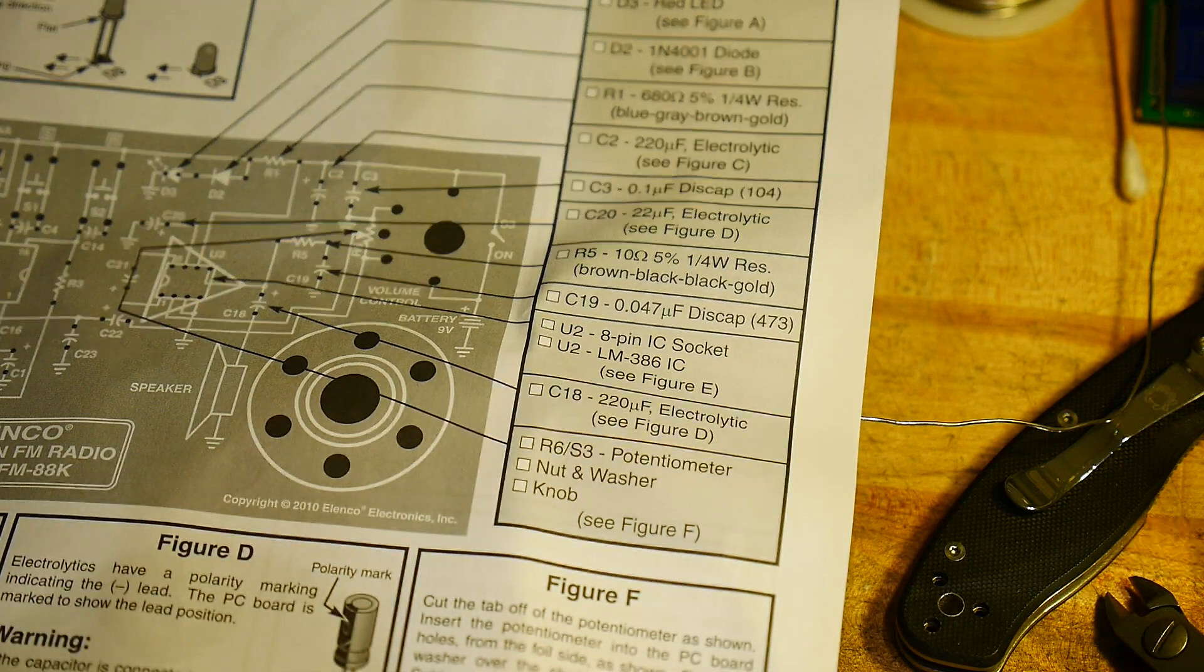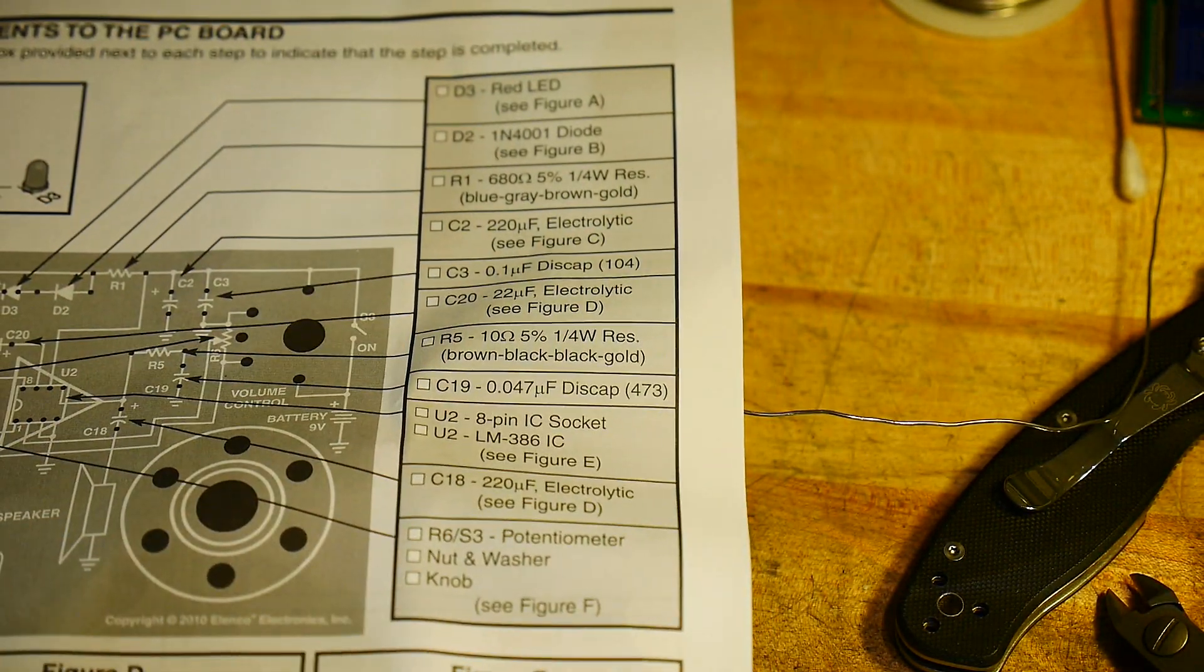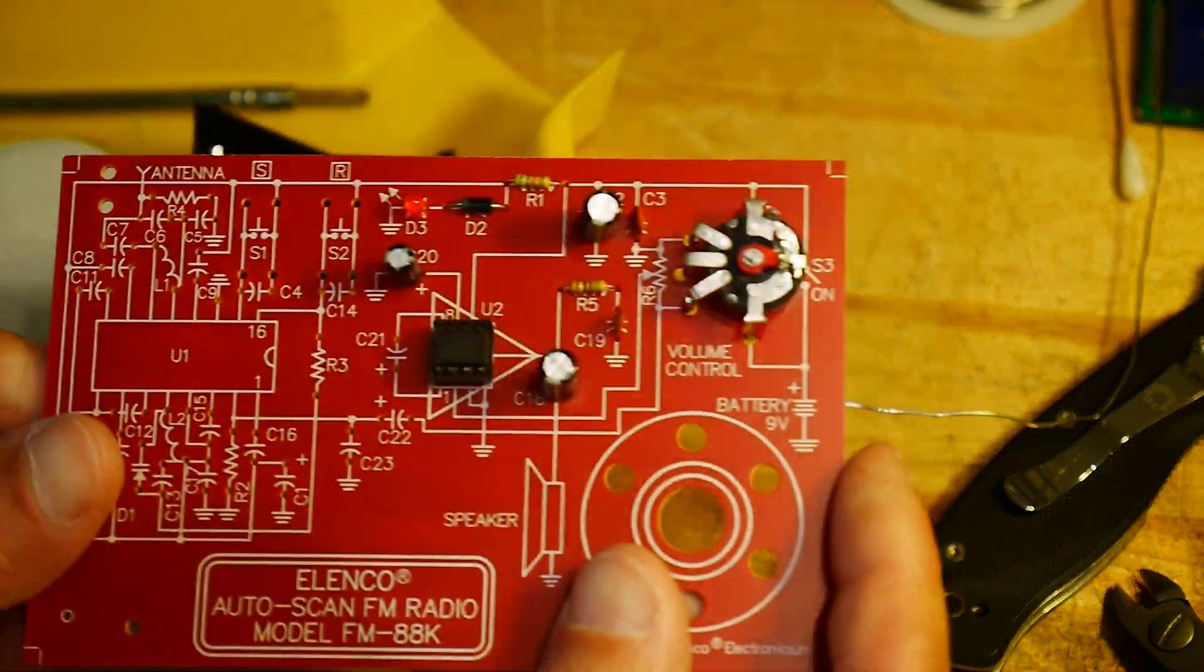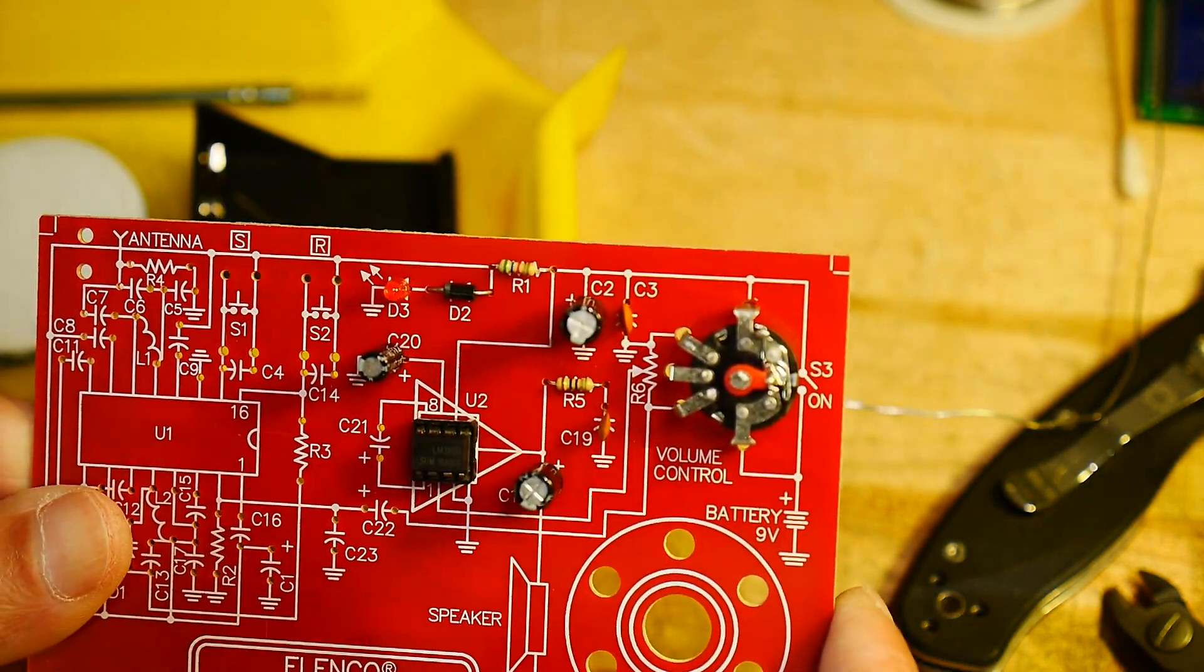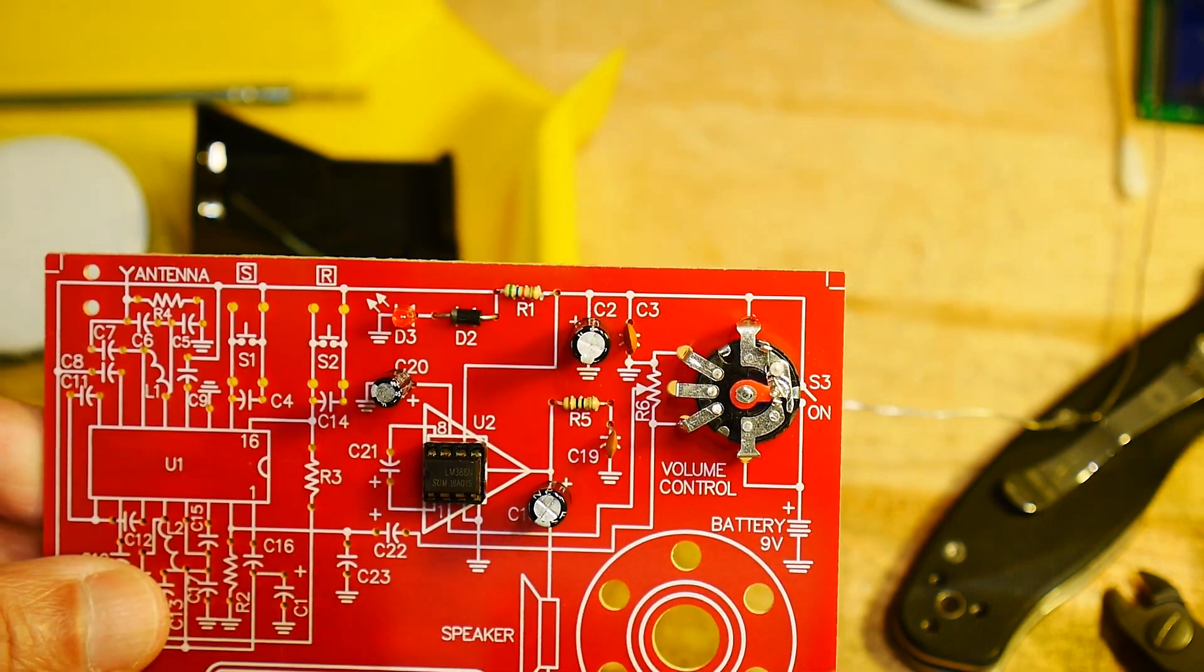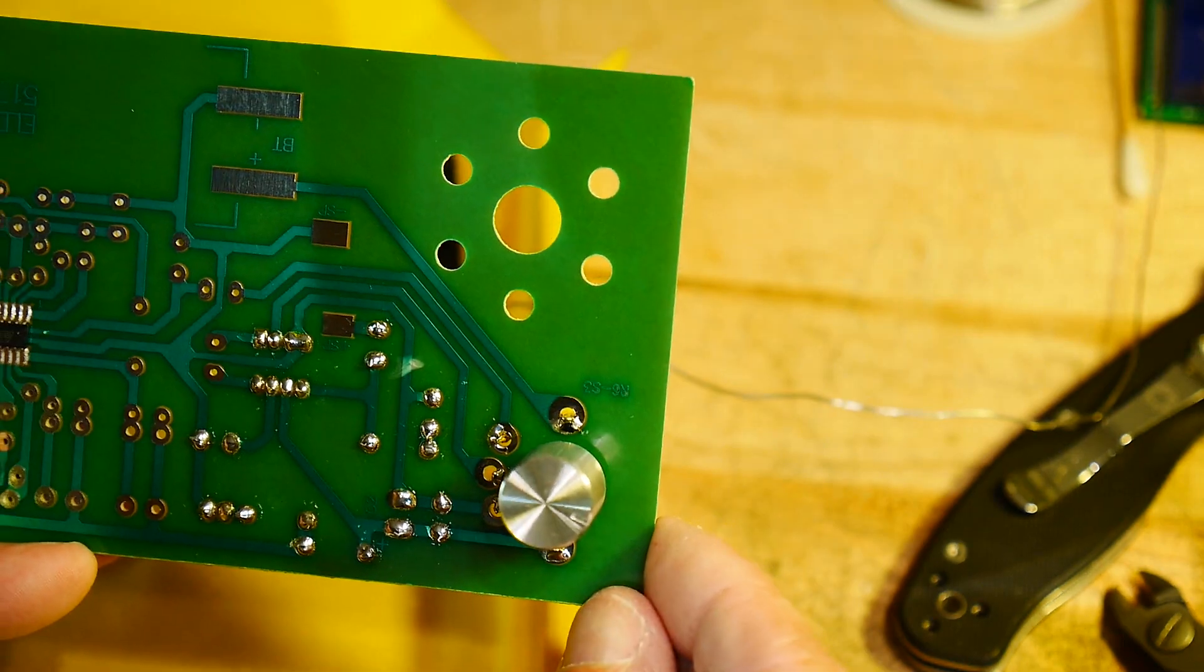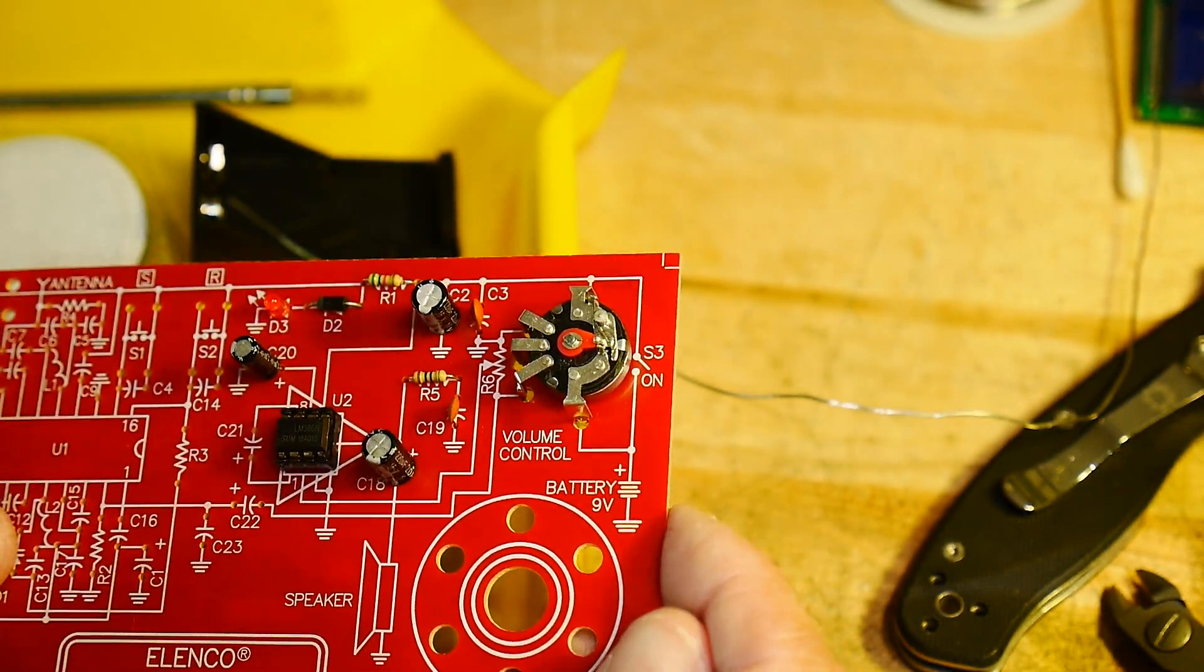So after you've done this particular checklist, this is what the PC board will look like. We have the part of the output circuit done, the audio amplifier. And the volume knob, which goes on the back side here. So that is section one of the kit.